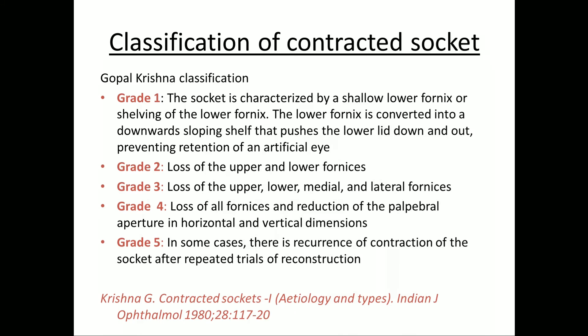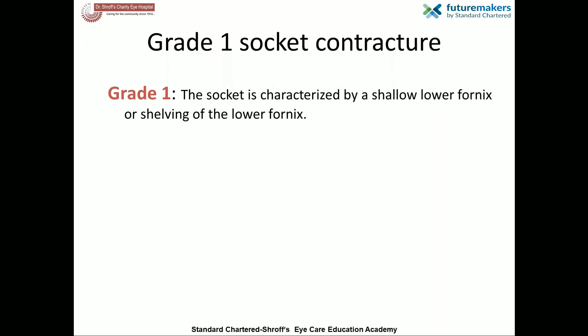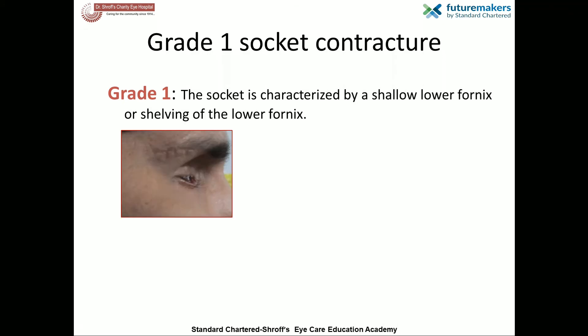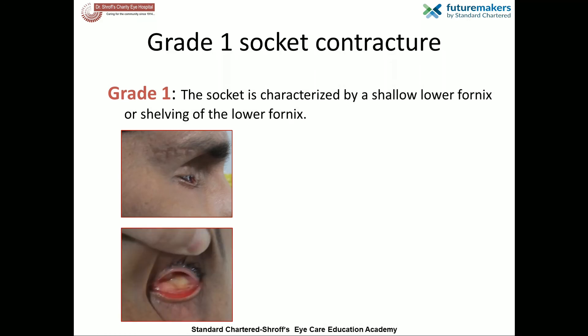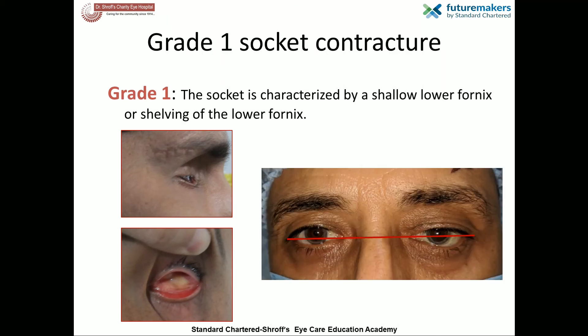Five grades of contracted socket have been described. Grade one contracture is characterized by shelving of the inferior fornix. The lower fornix is converted into a downward sloping shelf that pushes the lower lid down and out, thus making the prosthesis slightly unstable. This is mainly seen with the use of a bulky prosthesis causing sagging of the lower lid, as can be seen in the last photograph.